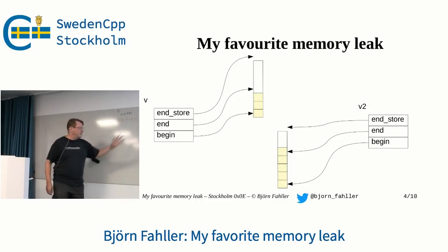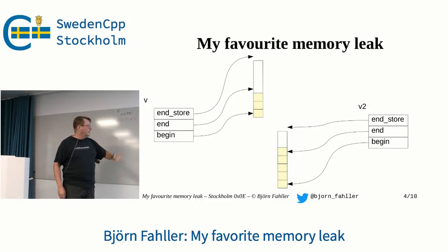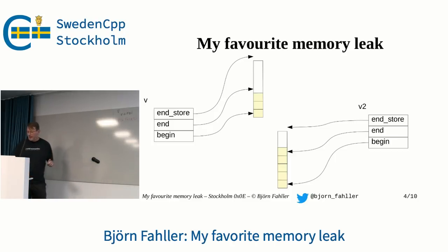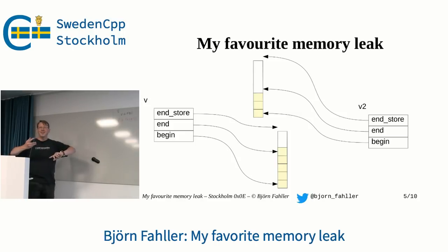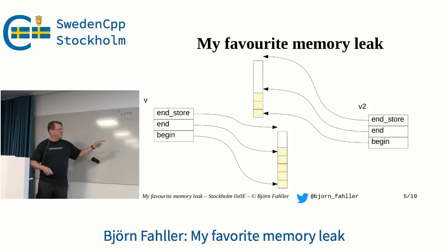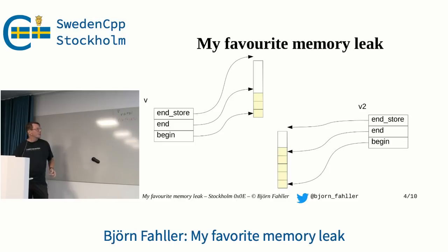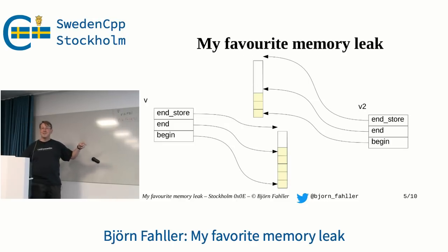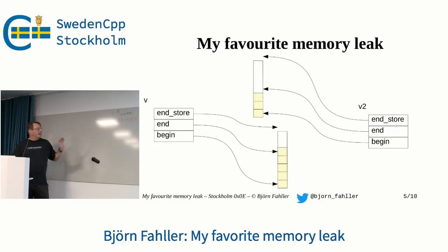So we create another vector, V2. V2 is pretty much the same thing — it has a few more elements. But here's a clever thing: swap. Have you thought about how swap works on vectors? You just change the pointers. It doesn't do anything with the elements; it just changes the pointers. The pointers in V now point to what V2 pointed to and vice versa. We can swap this — swap, swap, swap. This is a cheap operation. We're not really touching anything other than a few pointers.